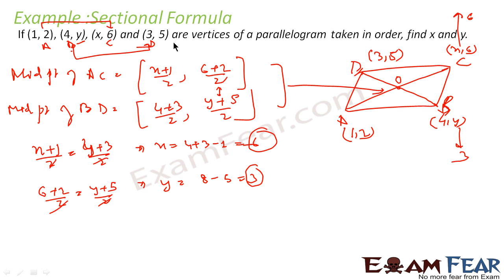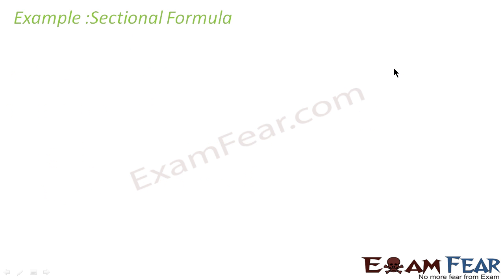Very simple. Since it is a parallelogram, we know that the intersection point of diagonals is the midpoint of both AC and BD. With this information, we found the value of x and y. Let us take one more example.